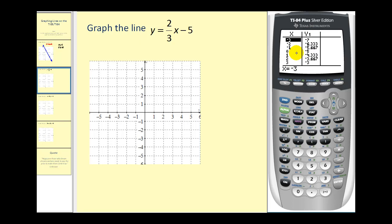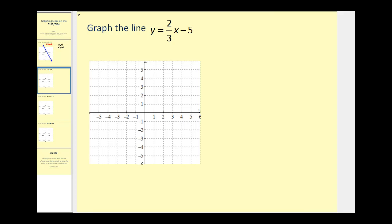So if we look at multiples of three in the table, these will be the values where y is an integer, rather than a repeating decimal. So let's use the points zero, negative five, and three, negative three. Here's zero, negative five, and three, negative three would be here. Our line passes through these two points.